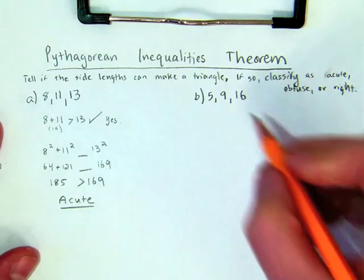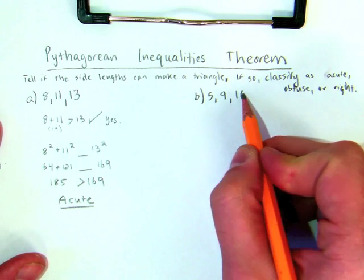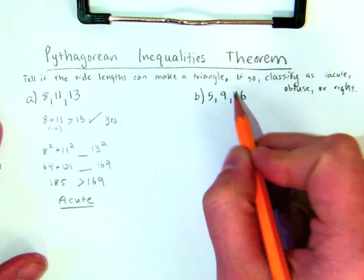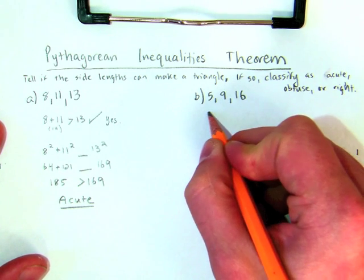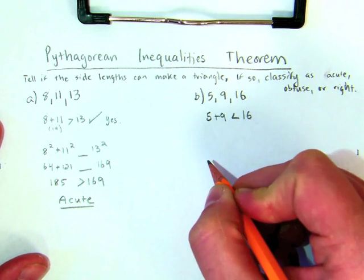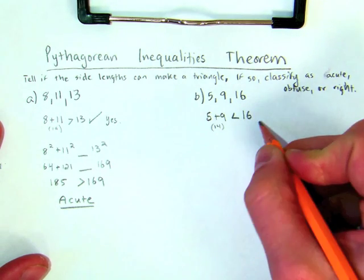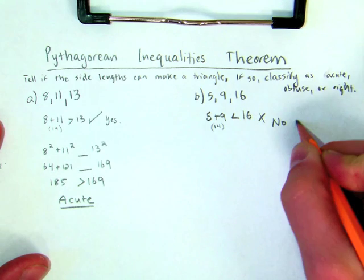Now, over here on the right, tell if the side lengths can make a triangle: 5, 9, and 16. Well, the two smallest sides are 5 and 9. Let's see. 5 plus 9 is actually less than 16. 5 plus 9 is 14, which is less than 16, so no triangle.